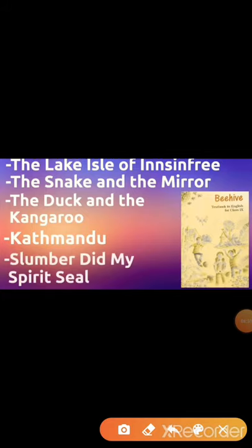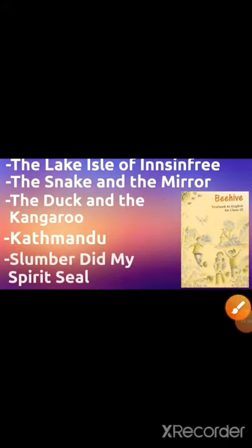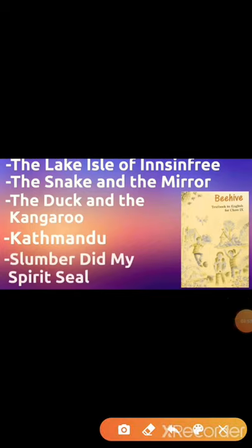From Beehive, the following are deleted: 'The Lake Isle of Innisfree', 'The Snake and the Mirror', 'The Duck and the Kangaroo', and 'A Slumber Did My Spirit Seal'. These include both prose and poem chapters, so you have fewer chapters to study from Beehive.